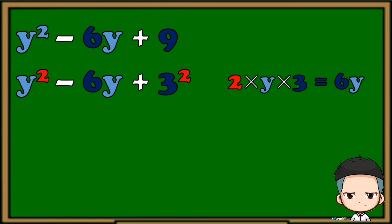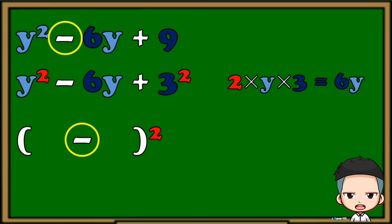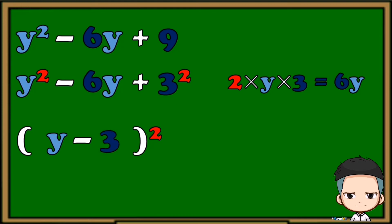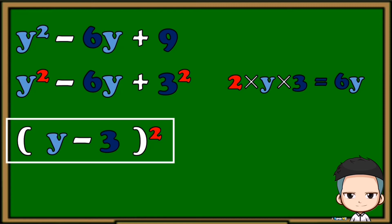To factor this perfect square trinomial, first prepare the parenthesis — we use subtraction here because we're just copying the operation before the second term in the original given. Next, copy the base of the first term and the base of the last term. Our final answer: the factored form of y squared minus 6y plus 9 is the quantity of y minus 3, squared.